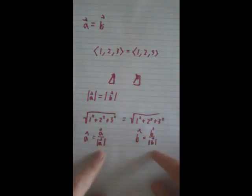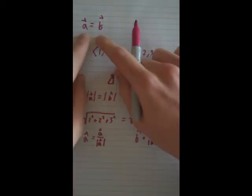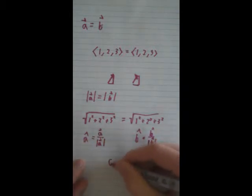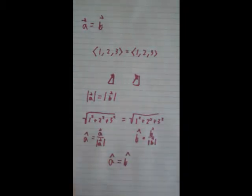Since the vectors are the same, they are going to have the same numerator. So naturally, these will be equal, and the directional vectors will equal the same thing. That's the logic of that.